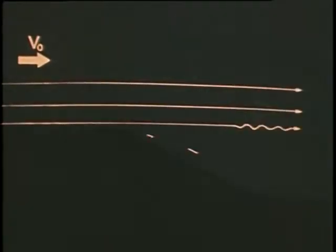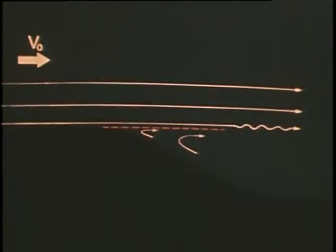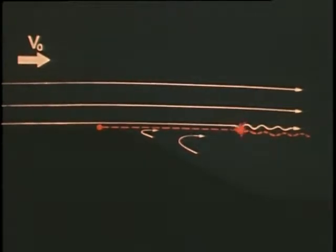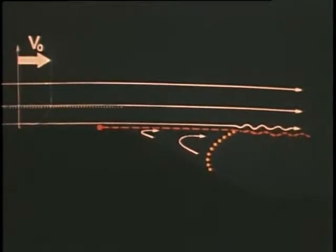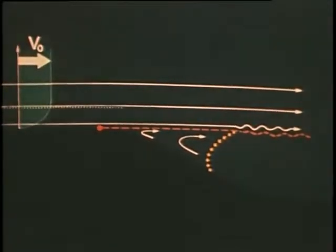Les procédés de visualisation précisent notamment l'allure des lignes de courant, la frontière de la zone décollée, le point et l'angle de décollement, le point de transition et la zone turbulente, enfin la frontière de la couche limite ainsi que l'allure des profils de vitesse en différents points de la paroi dans la partie laminaire de l'écoulement.